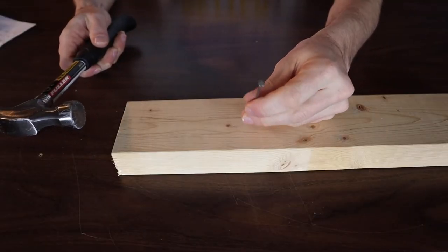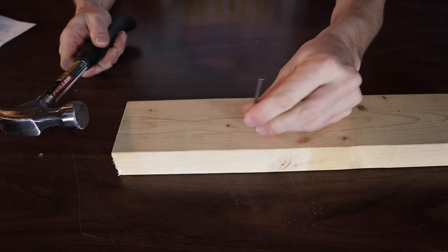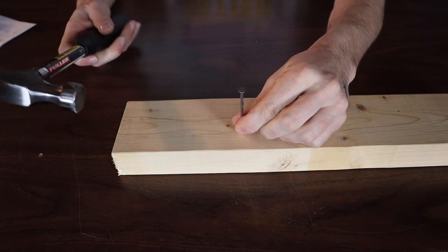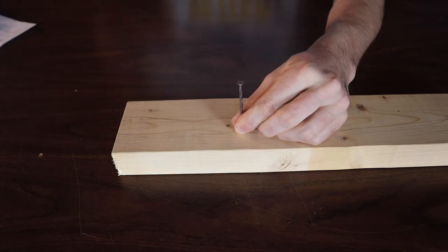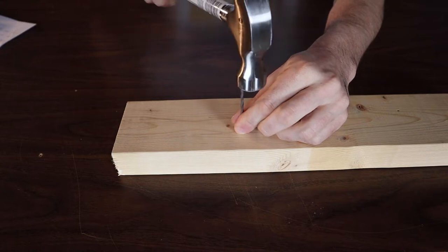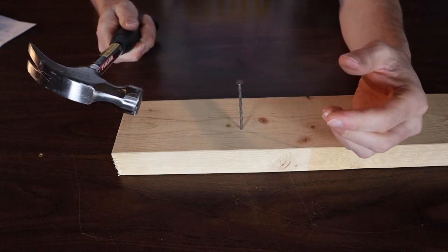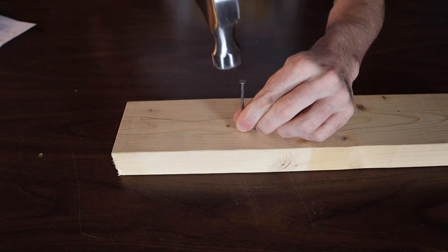When you're ready to start your nail, hold the nail close to the material at the bottom and do light taps to start it. Just let the weight of the hammer fall onto the nail—that's going to hold it in place, and then you'll be ready to drive it in all the way.